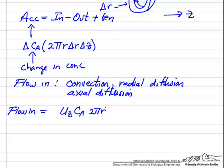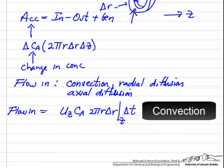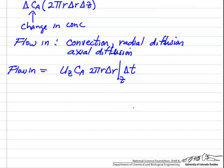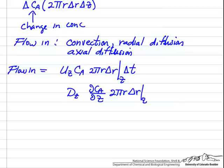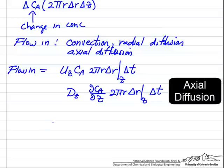The area is 2πr · delta r — that's the area of the face of this annular region, with flow coming perpendicular to it. We're looking at the amount that flows in over some interval delta t since we're looking at a transient term. The axial diffusion term is due to diffusivity in the z direction times the concentration gradient, same area and evaluated at z, times delta t. There's a minus sign because diffusion is from high concentration to lower.